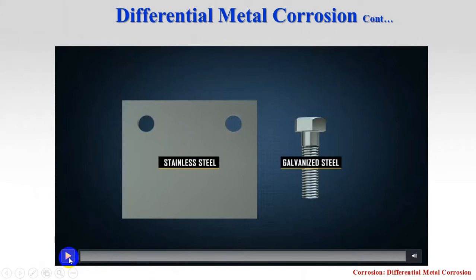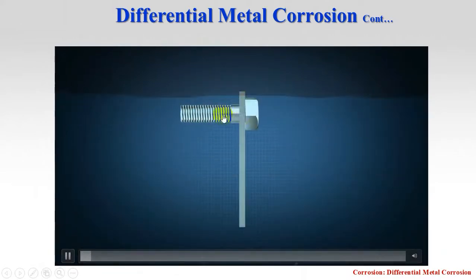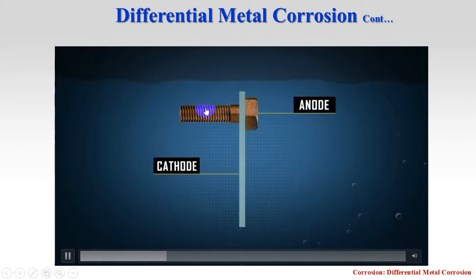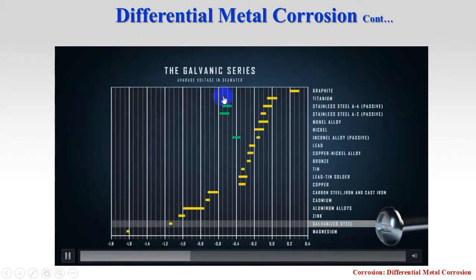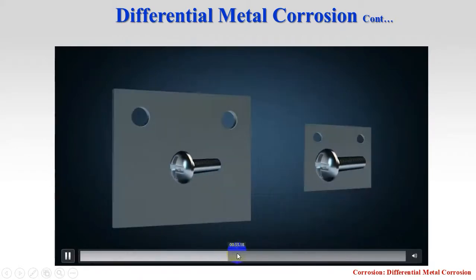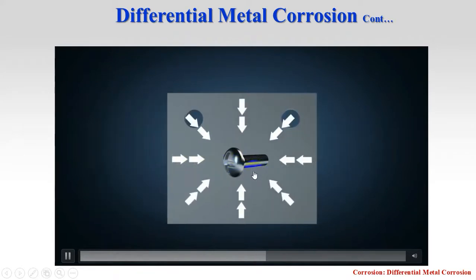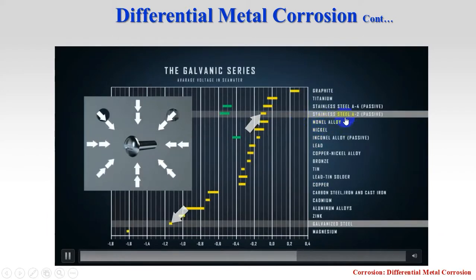Now we shall see an animated video. Here we have stainless steel and galvanized steel. Galvanized steel has a lower E⁰ value and stainless steel has a higher E⁰ value. When two different metals are placed together, galvanized steel easily acts as the anode and stainless steel acts as the cathode, so the galvanized metal corrodes rapidly. In the galvanic series, stainless steel is more passive compared to galvanized steel, and the rate of corrosion of galvanized steel is rapid due to the difference in E⁰ values.